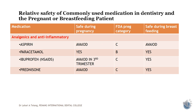These are the safety classifications based on relative safety of commonly used medication in pregnancy or breastfeeding. Aspirin is completely avoided during pregnancy — FDA pregnancy category C — and breastfeeding should also be avoided. Paracetamol is one of the safest analgesics during pregnancy as well as breastfeeding, in category B. Ibuprofen and other NSAIDs are better to avoid in the third trimester as they are category C, but during breastfeeding they are safe. Prednisolone is an anti-inflammatory steroid to be completely avoided during pregnancy, but may be given if required during breastfeeding.